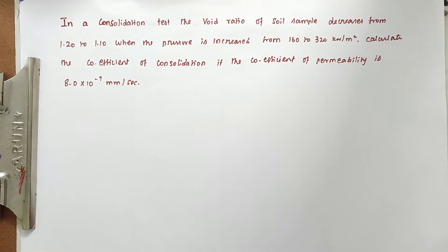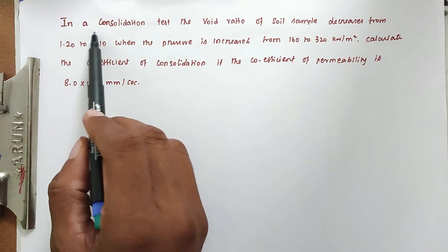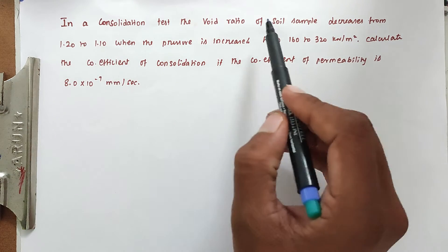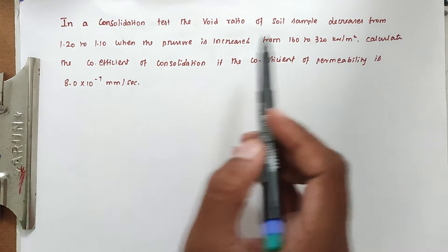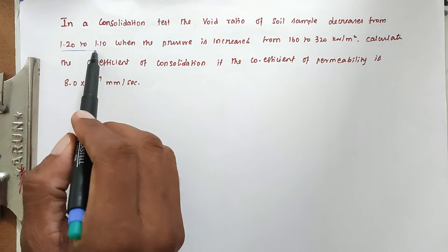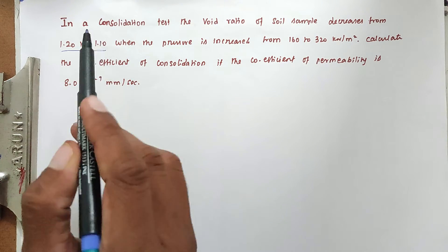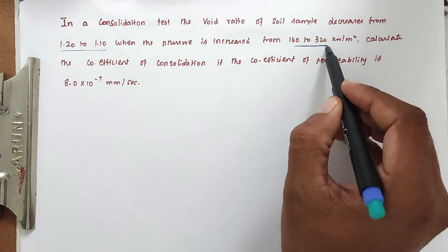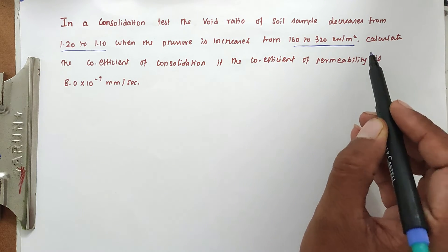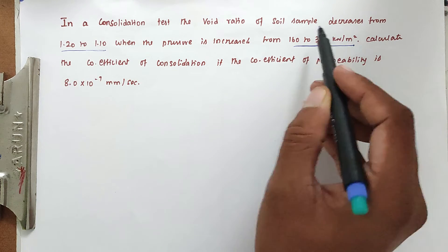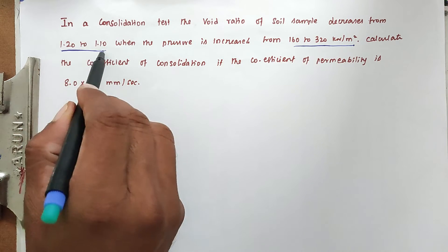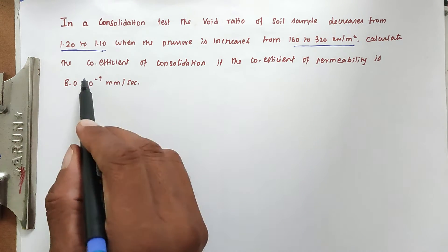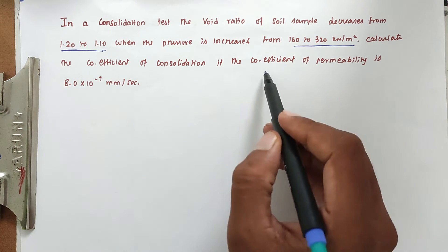Hello friends, welcome to Civil Engineering Exam. Today we're going to see a problem related to soil mechanics in the topic of consolidation. The problem is: in a consolidation test, the void ratio of the sample decreases from 1.20 to 1.10 when the pressure is increased from 160 to 320 kilonewton per meter square.